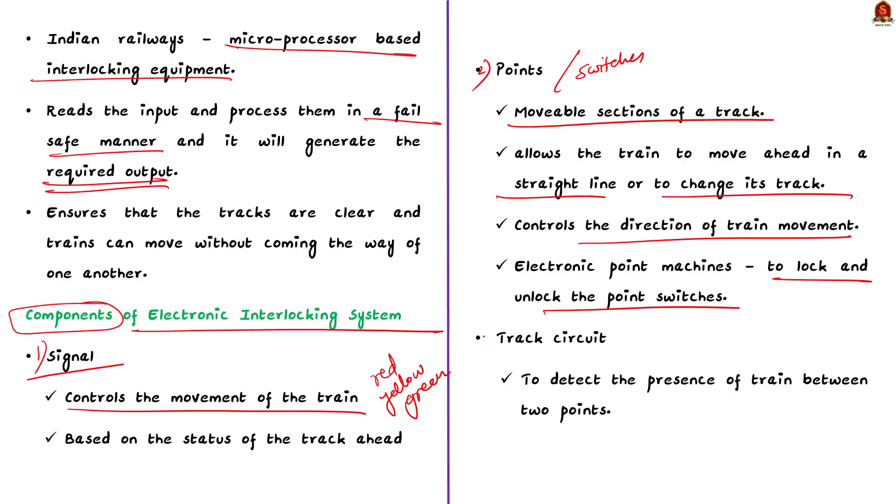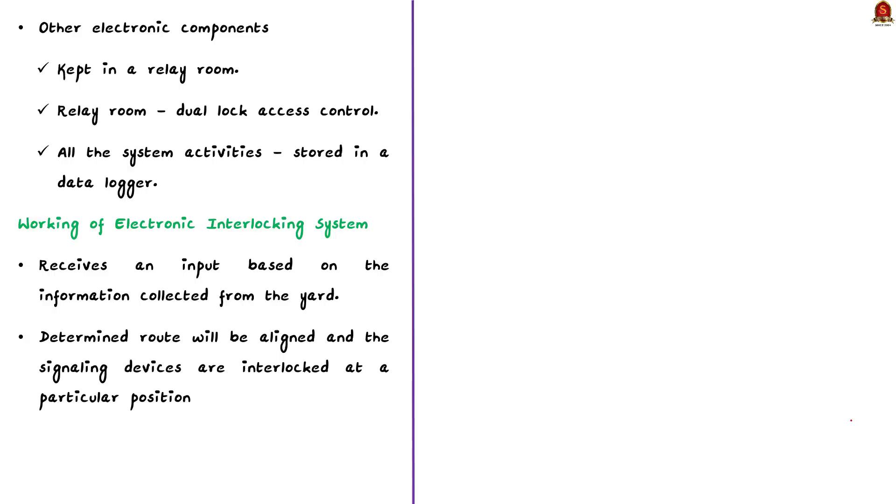Lastly, we have the track circuit. Track circuits are used to detect the presence of a train between two points of the track. They ensure that it is safe for a train to proceed and prevent multiple trains from running on the same track simultaneously. All the electronic systems and communication devices of the interlocking system are housed in a relay room. This room serves as a control center and it provides a secure environment for these critical systems. The relay room is typically equipped with dual lock access control and this ensures the safety and prevents unauthorized access. Additionally, all the activities of the interlocking system are recorded and stored in a data logger. This data logger is something that is similar to black box used in aircrafts. In aircrafts, they are generally used for analysis and investigation purposes. So, this data logger is similar to black box.